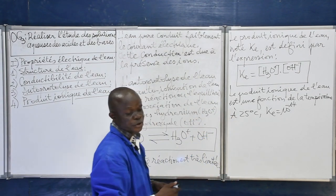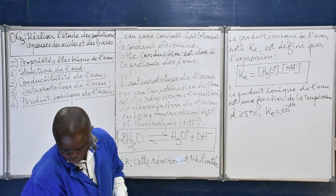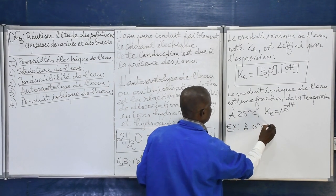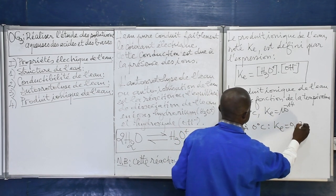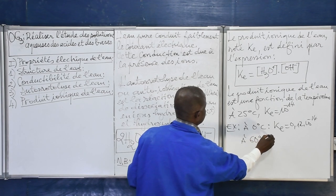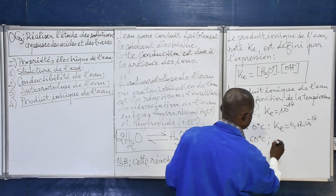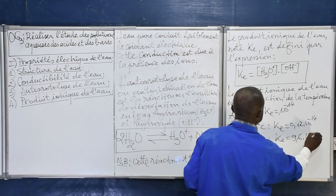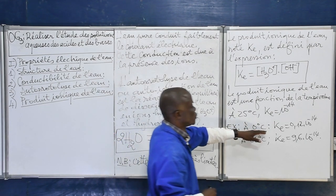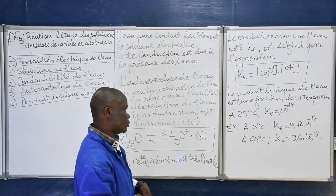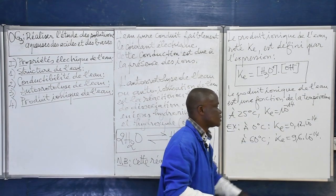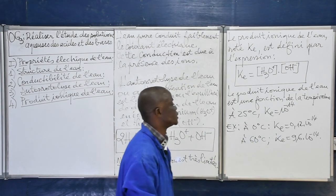Le produit ionique de l'eau est une fonction croissante de la température. À 0°C, Ke = 0,12 × 10⁻¹⁴. À 60°C, Ke = 9,6 × 10⁻¹⁴. À chaque température, on a une constante Ke différente.